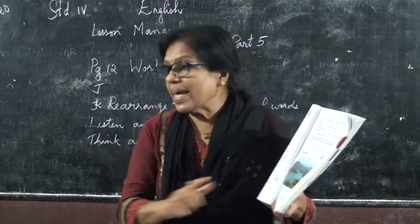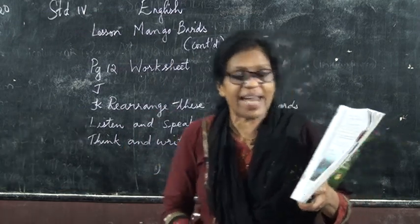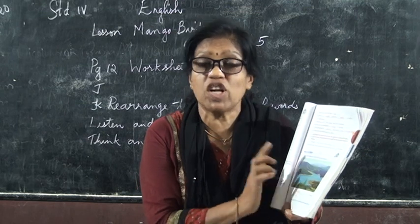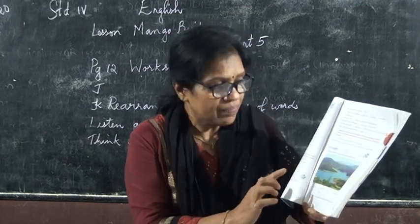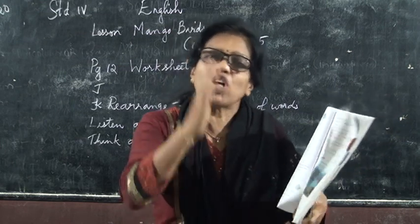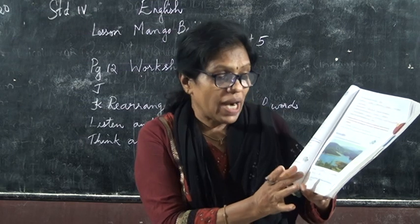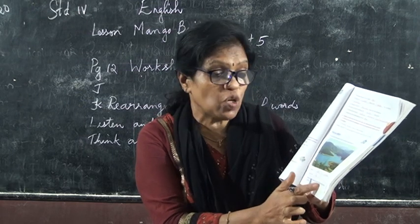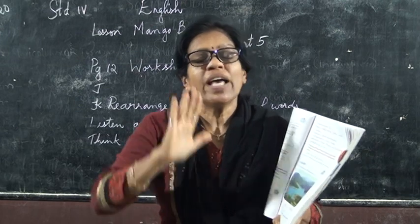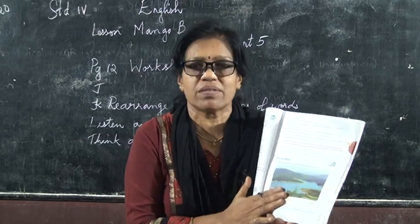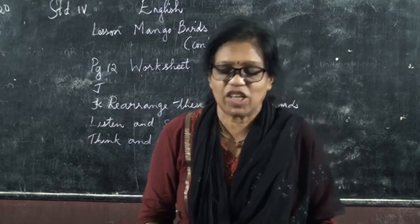The last activity is 'Think and Write.' There is a picture — write down everything you can see in that picture in the blanks; you will do that on your own. Also write a paragraph of five sentences in your notebook using the words you have written. I hope everybody will be able to do this. Thank you, children. That's all for today.